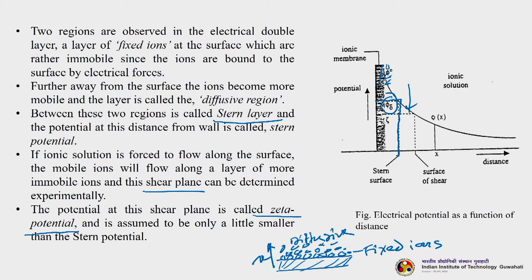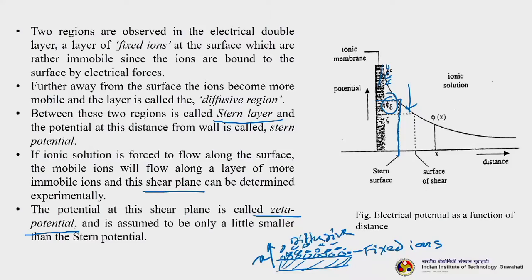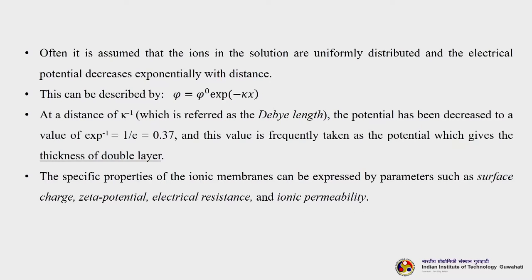The stern potential value is higher than the zeta potential. It is often assumed that ions in solution are uniformly distributed and the electric potential decreases exponentially with distance, expressed as φ = φ₀ · e^(−κx). At a distance of κ⁻¹, known as the Debye length, the potential has decreased to e⁻¹ = 0.37, and this value is frequently taken as the thickness of the double layer. The specific properties measurable for ionic membranes are surface charge, zeta potential, electrical resistance, and ionic permeability.